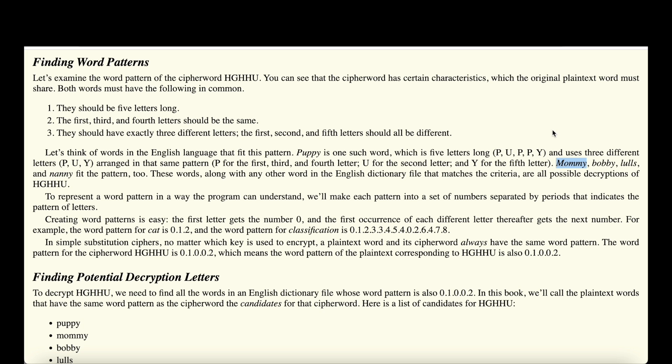Based on that, there are certain words that would accomplish that. For example, mommy — because here we have the same letter M in the first, third, and fourth place, and the second and fifth places are different. Of course, a number of different words would also work, for example nanny. But this already significantly reduces the number of possible words available to us.